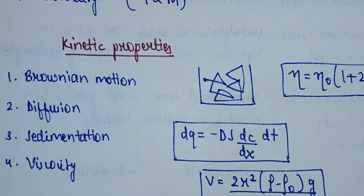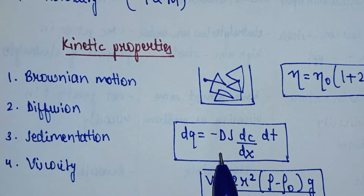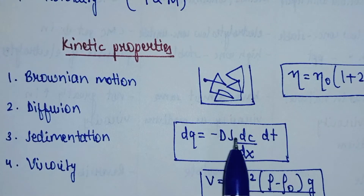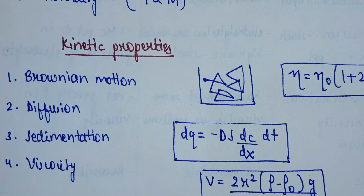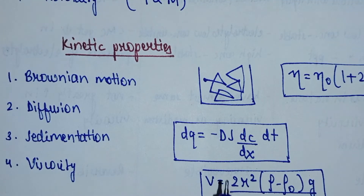The next kinetic property is diffusion. Diffusion means that particles move from an area of higher concentration to an area of lower concentration. Particles continuously diffuse until equilibrium is reached. For diffusion, Fick's first law is used, with the equation: dq = −D · (dc/dx) · dt, where dq is the amount of substance diffused, dt is time, S is the plane of area, dc/dx is the change in concentration over distance, and D is the diffusion coefficient.